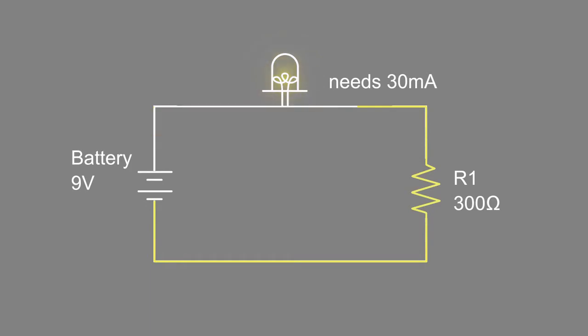The LED can only handle so much current, so we need to make sure we have enough resistance in our circuit, or the LED will blow.